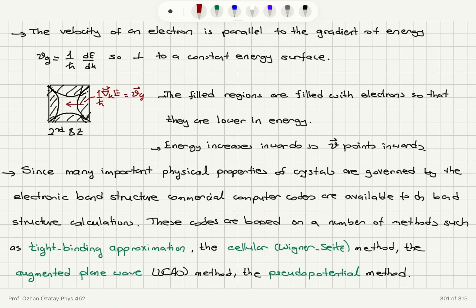And the energy increases when we go from filled states to empty states in the reduced zone scheme. And the velocity of the electron should always point inwards to the empty states perpendicular to the constant energy surface. And we have introduced the several methods like tight binding approximation, Wigner-Seitz, augmented plane wave, and pseudopotential methods to do computer codes for electronic band structure calculations.